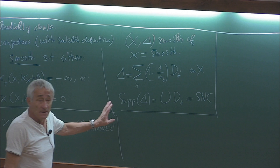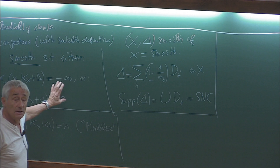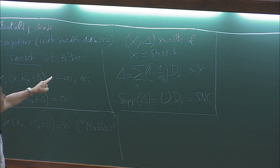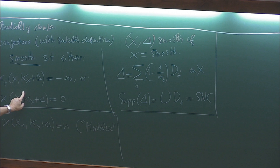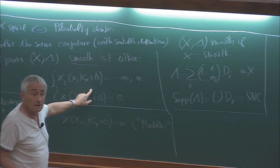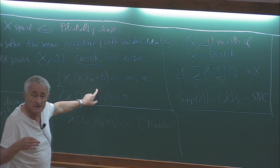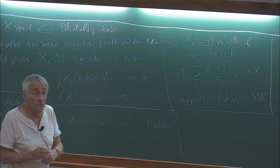So this is the situation. Now we need to say a little bit in order to say that this is potentially dense, for example. We need to know, at least in the analytic situation, what are the entire curves on these objects, and what are the integral points on these objects if everything is defined over a certain field k.